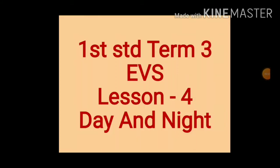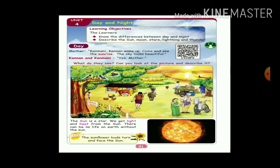Good morning students. First standard, term 3, lesson 4. Lesson 3 classwork is complete. Now we can try the classwork for lesson 4 — Day and Night. Take page number 91. Today we are going to learn about the difference between day and night, and describe the sun, moon, stars, lightning, and thunder.